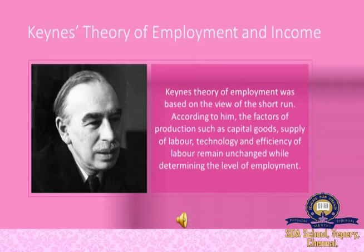His theory was a general theory as it tried to explain all types of situations — the equilibrium level of employment, the concept of full employment, as well as the possibility of underemployment. Keynes' theory of employment was based on the view of the short run — not the long run. According to him, factors of production such as capital goods, supply of labor, technology, and efficiency of labor remain unchanged while determining the level of employment.